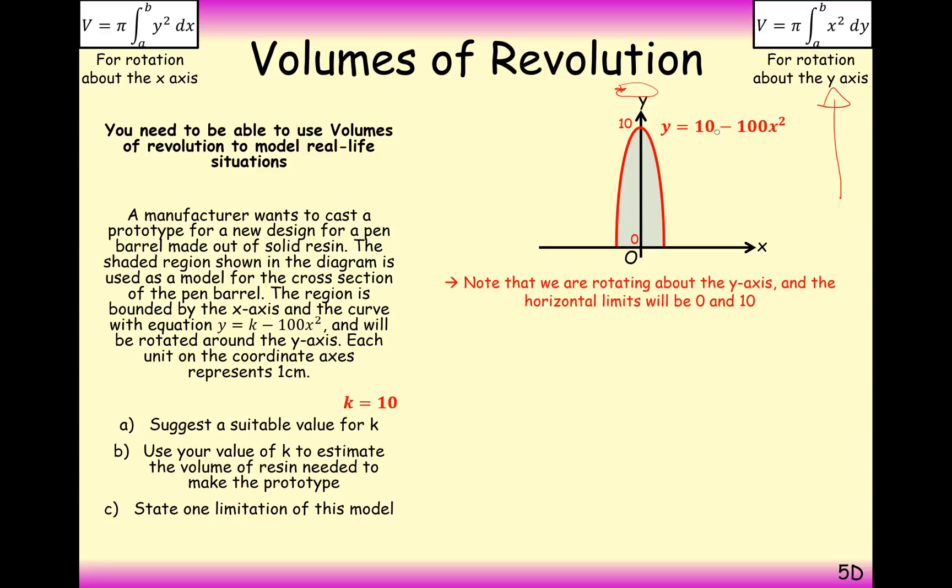In this case you need to know you're going from 0 to 10 on your y-axis and then it's going to be x squared. So we need to rearrange this formula here to make it x squared equals. So that's the first thing we're going to do up here. So the first thing we'll do is add 100x squared onto the other side, take away the y onto the other side, divide through by 100 and we get x squared equals 1 tenth minus y over 100.